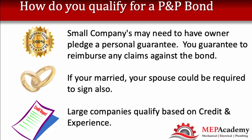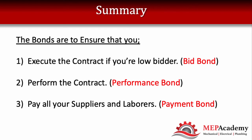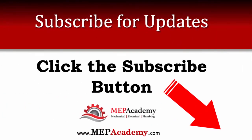Large companies usually qualify based on their credit rating and experience. Until you get some experience and establish credit, you may have to give a personal guarantee. In summary, bonds are basically insurance that you will do what you said you would — execute the contract if you are the low bidder, and pay all those who helped you build the project, whether subcontractors, vendors that sold you equipment and materials, or the workers who performed labor on your behalf. Make sure to subscribe to our channel to get notified of the latest videos we publish, and hit the like button if you found this video helpful, or leave us a comment below.